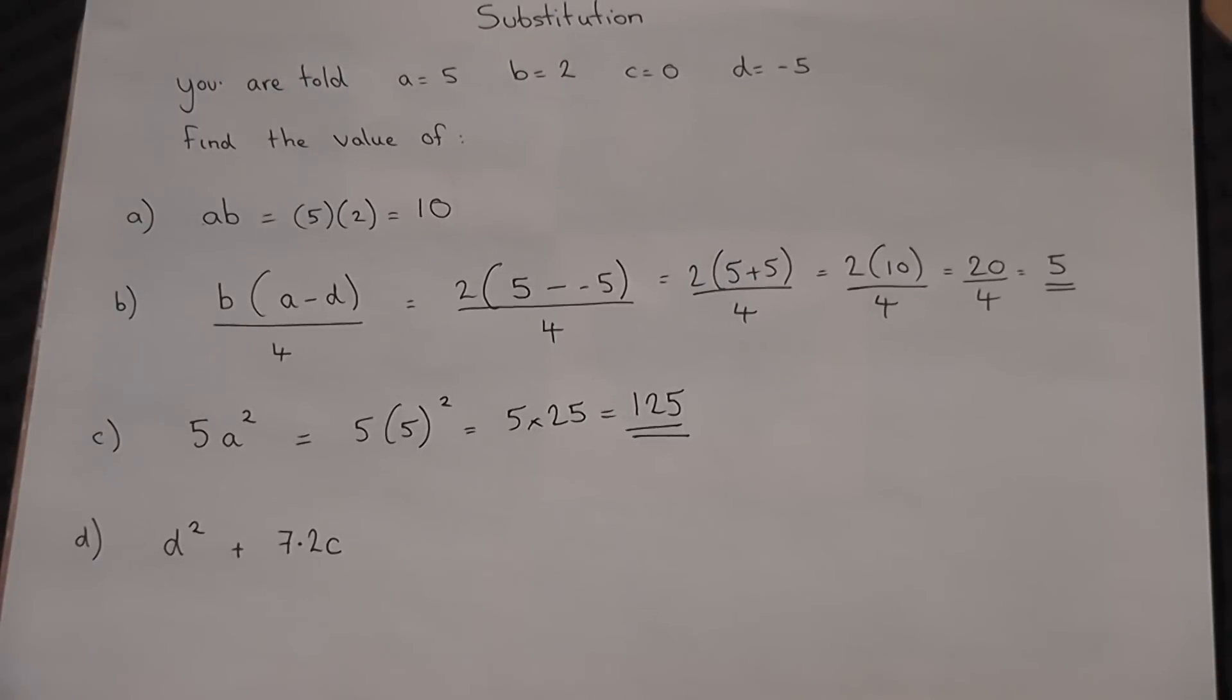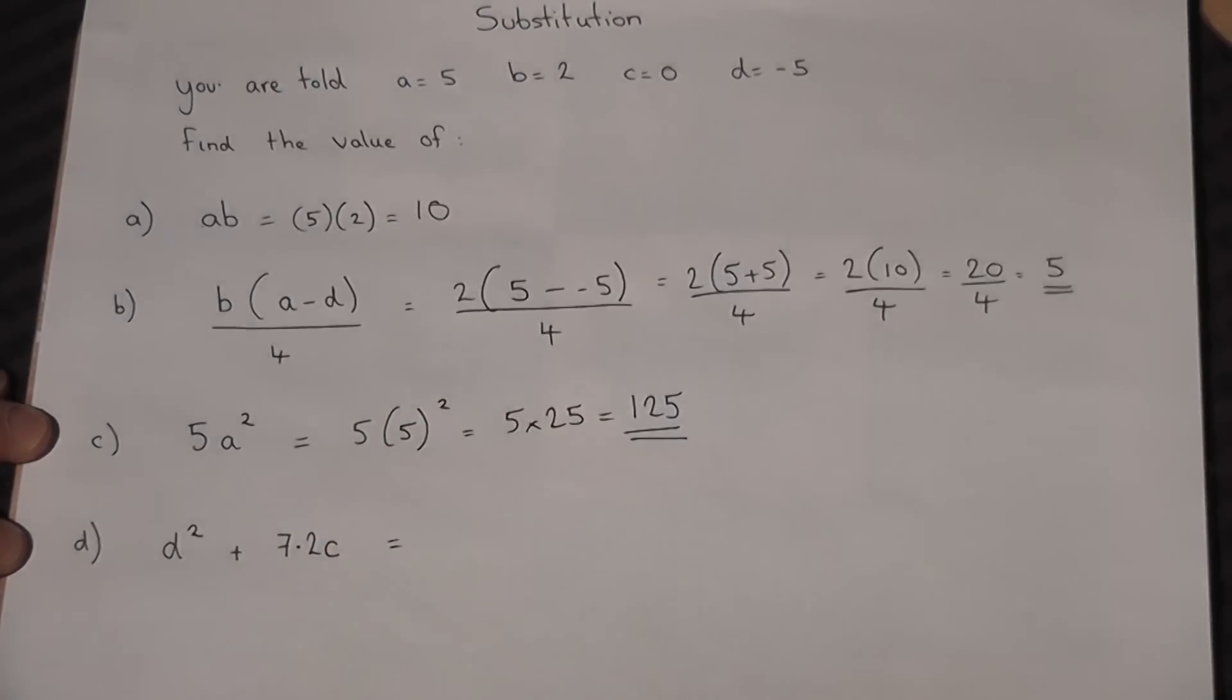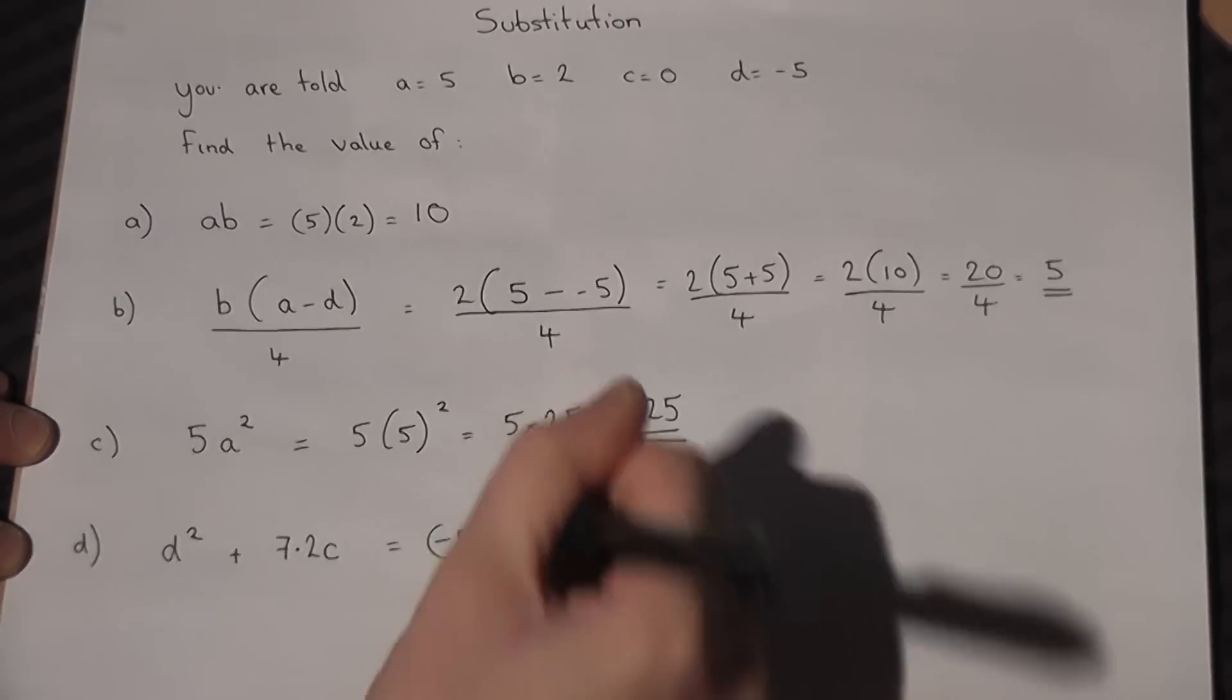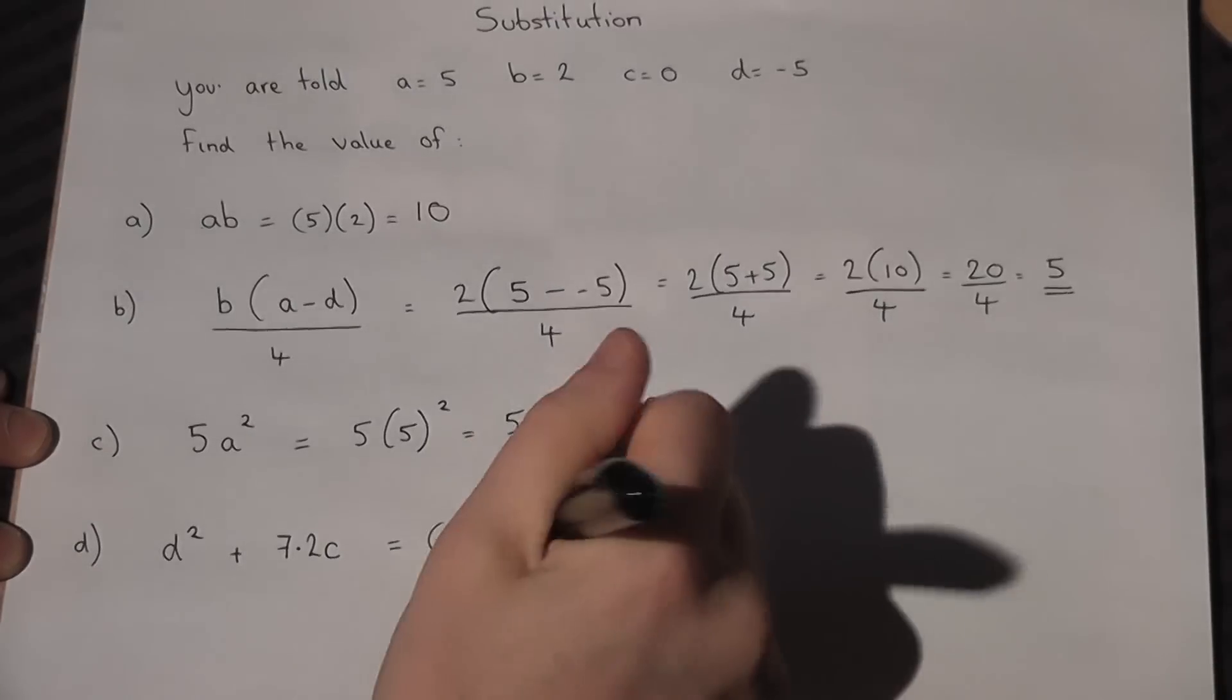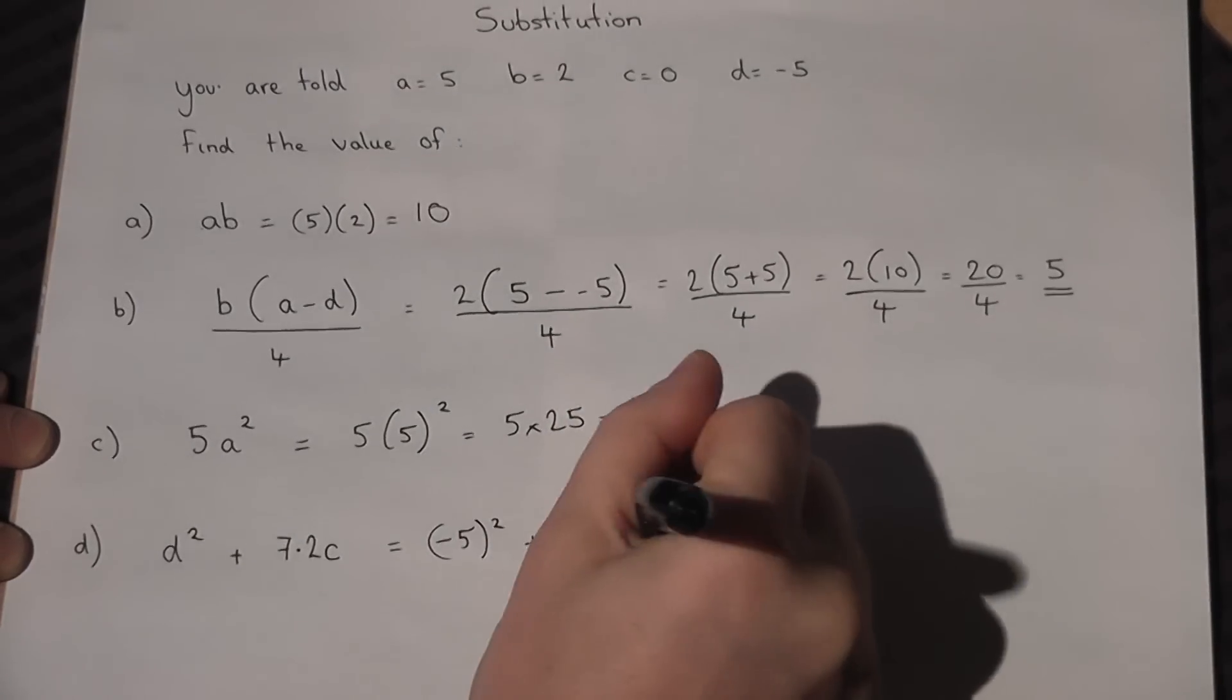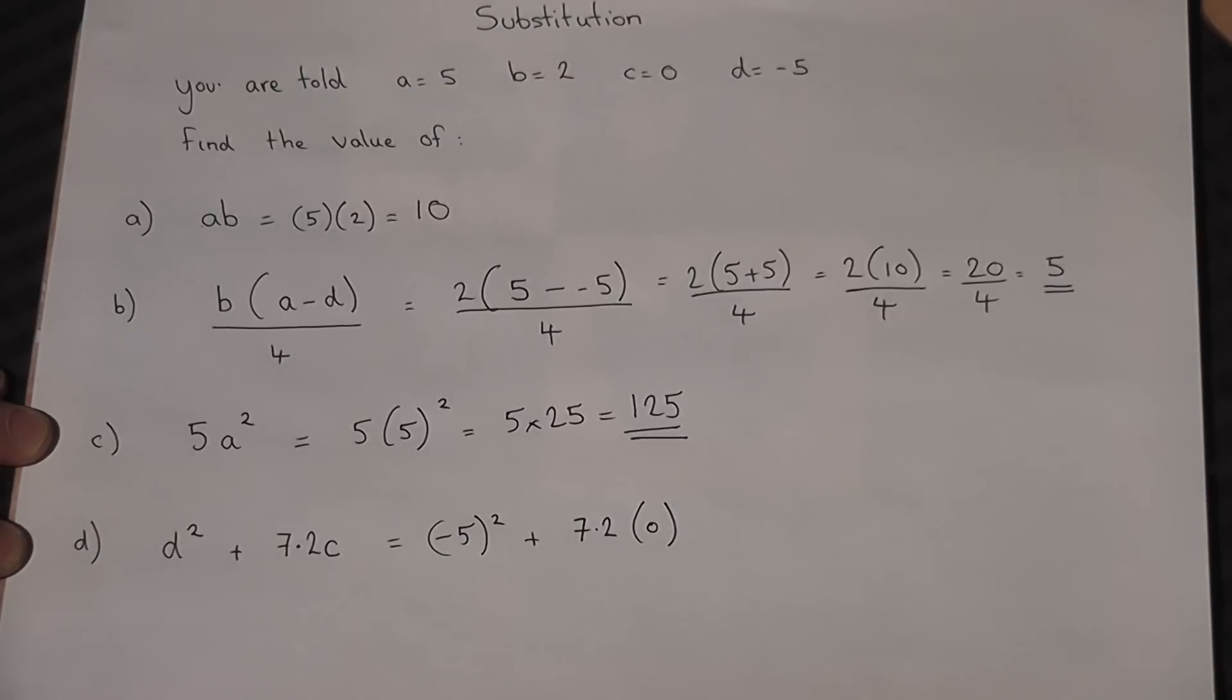Now the fourth one brings out two important facts. First, it's d squared. d was minus 5, so it's minus 5 squared—I always use brackets when powers are involved—plus 7.2 times 2 times c. Minus 5 squared is minus 5 times minus 5.